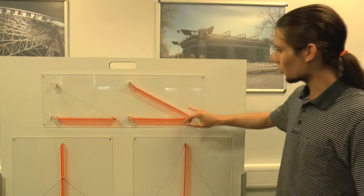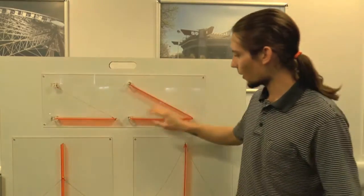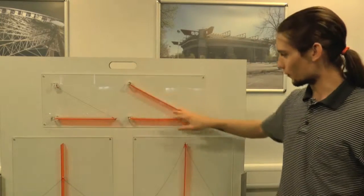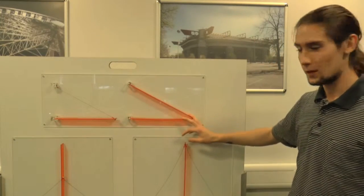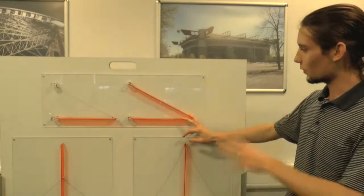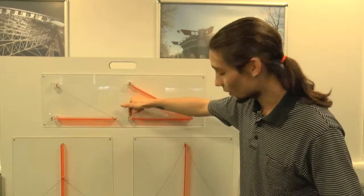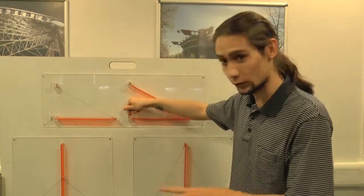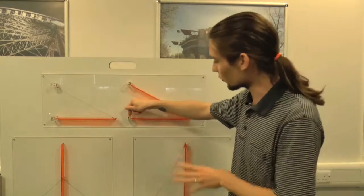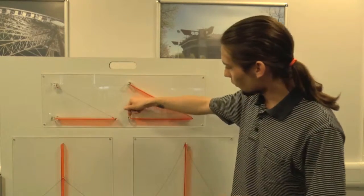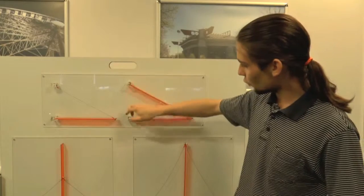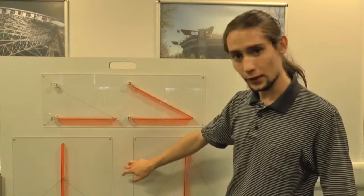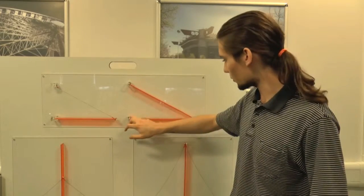We're going to use this model here to represent the lateral struts of the frame. From the canopy, you get two vertical forces transferred to this structure. One goes into the column, and the column will just transfer that to the ground in compression.